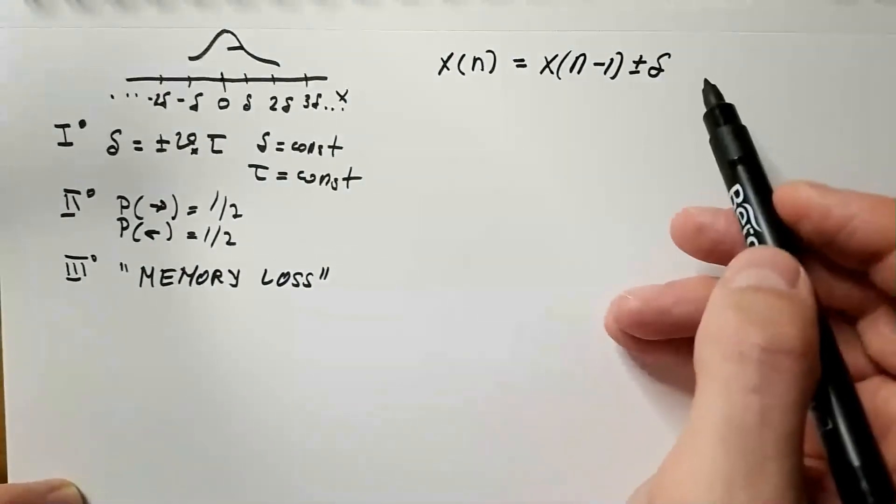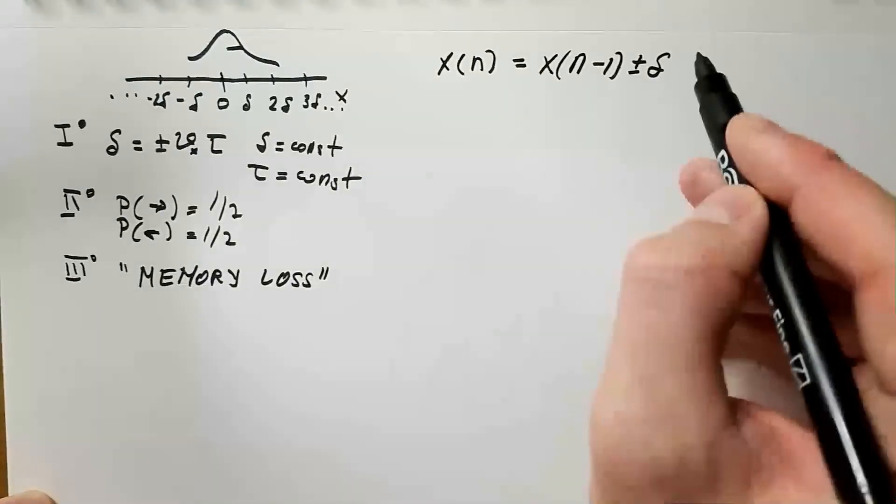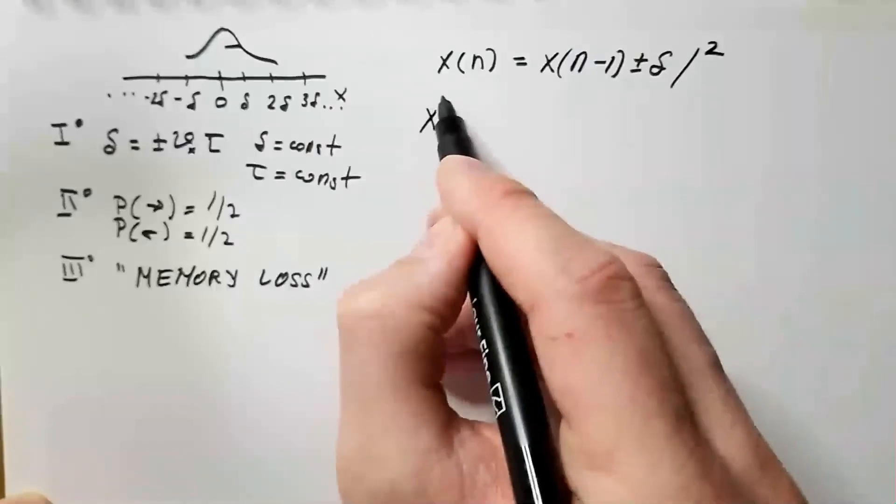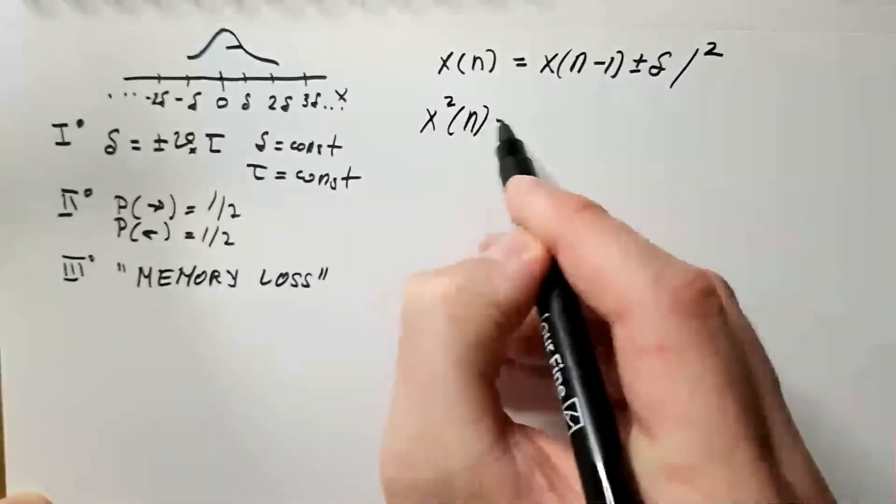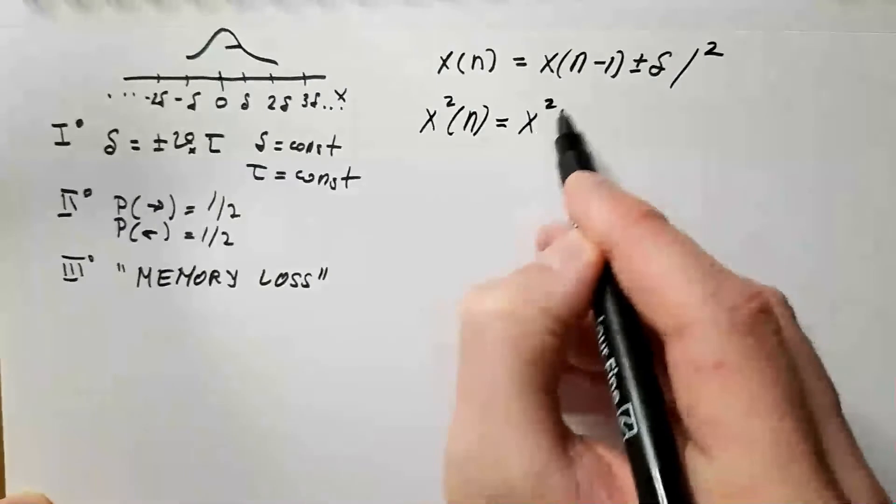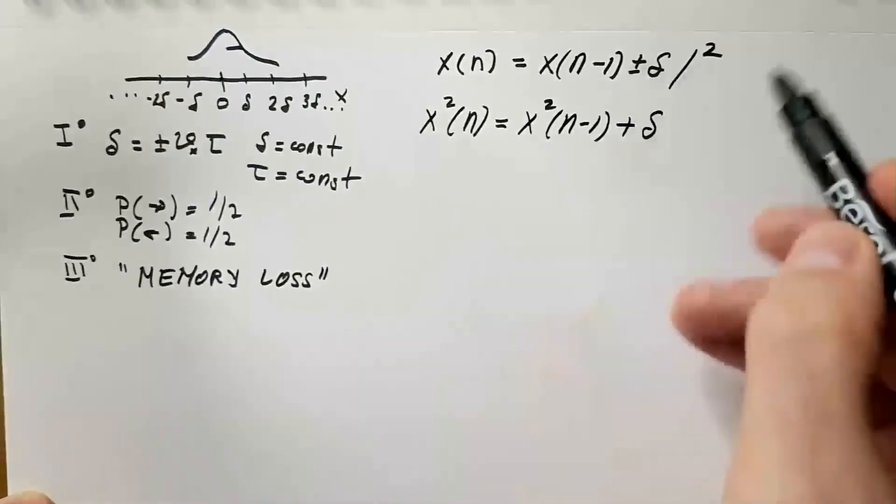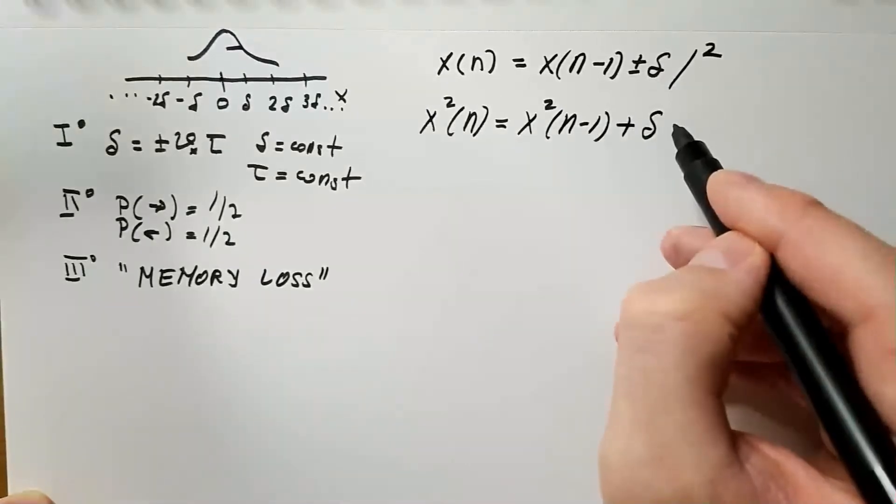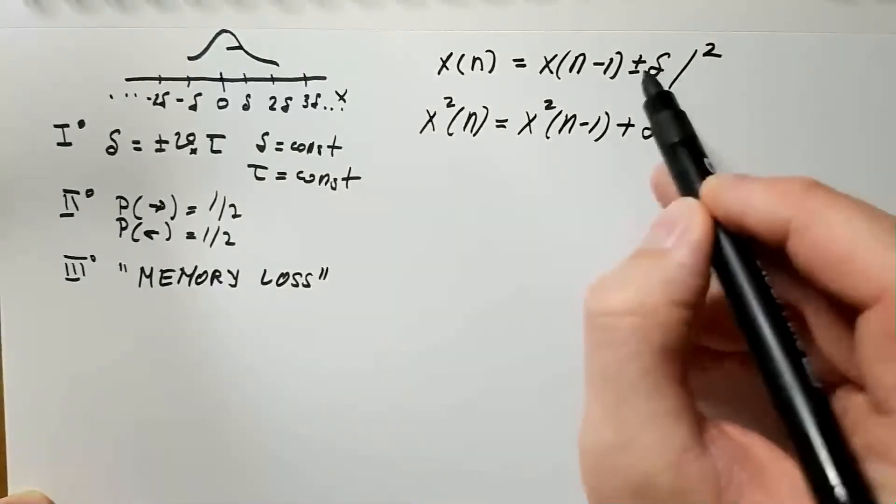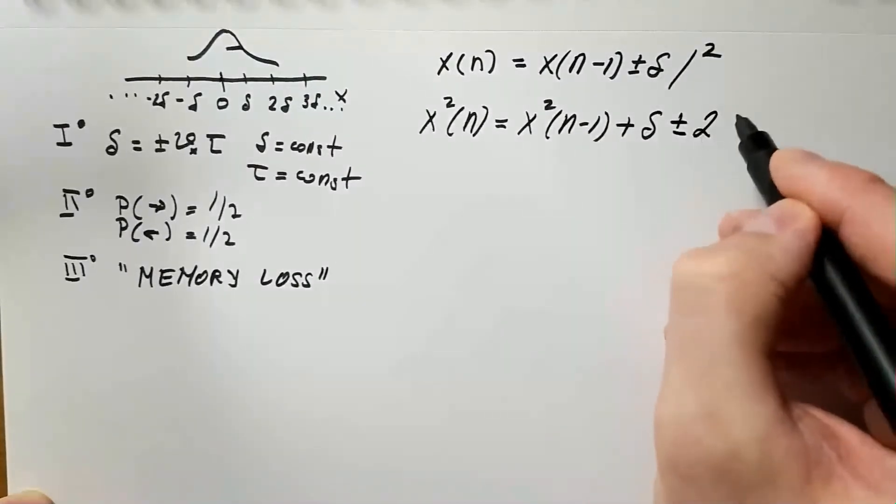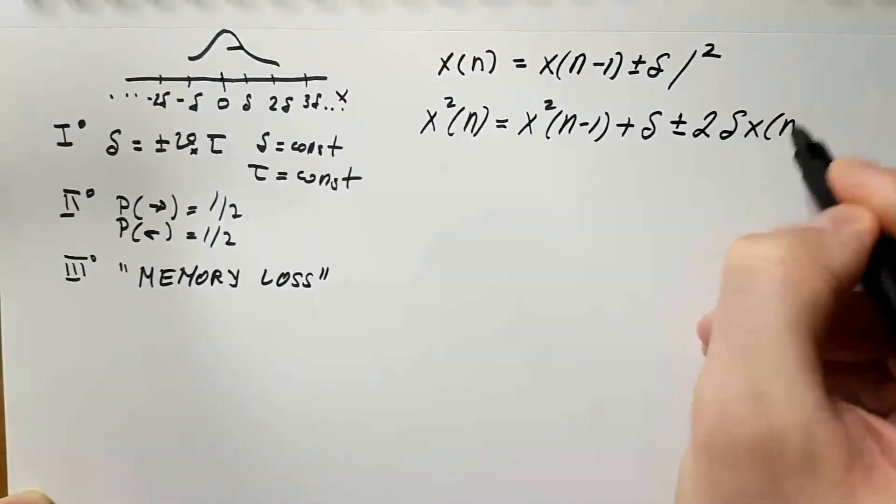Which means the particle could have found itself at x of n from where it was in the previous step and then traversing the distance plus minus delta. To get the mean square displacement, I first need to square this equation and then I get x squared of n is equal to x squared of n minus one plus delta squared. When I square, this minus also becomes plus. And plus the cross product of these two, 2 delta x(n-1).